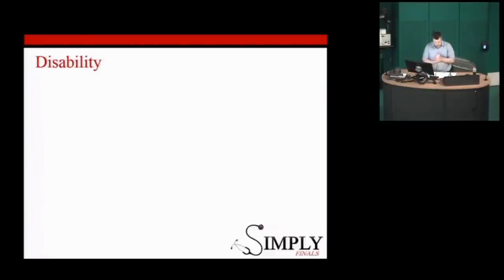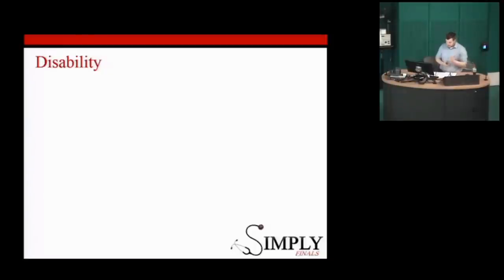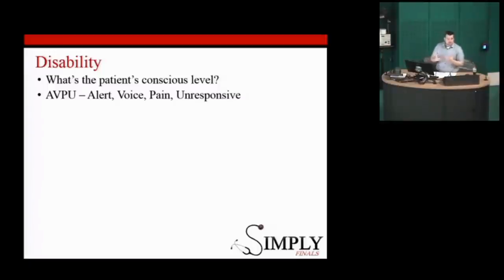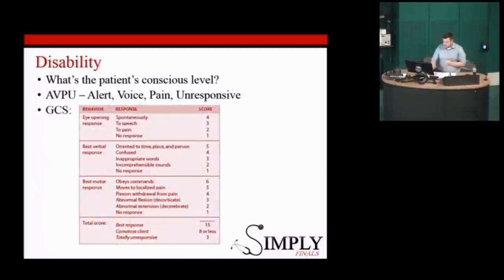Disability. What comes under disability? Assessment of the pupils, GCS, glucose, and temperature. What's the conscious level? If you can't remember the full GCS, the AVPU score is useful: is the patient Alert? Responding to Voice? Responding to Pain? Or Unresponsive? The GCS — everyone forgets it. Just think through each section by itself and make a judgement call on each component.